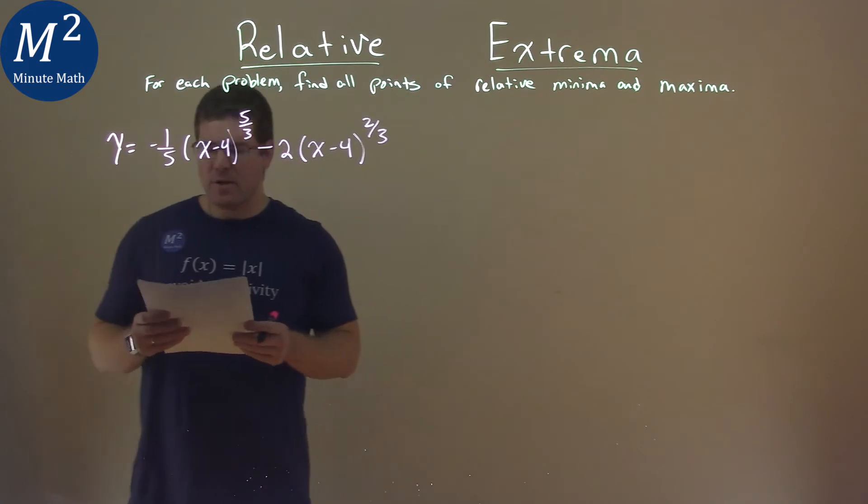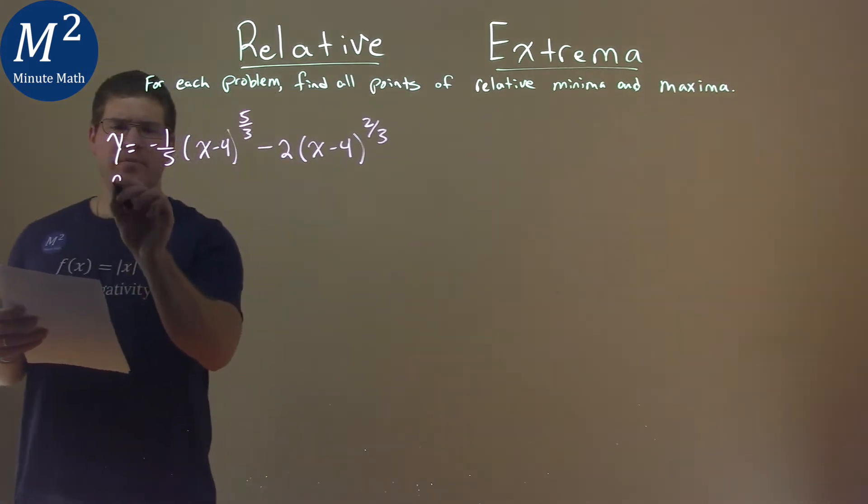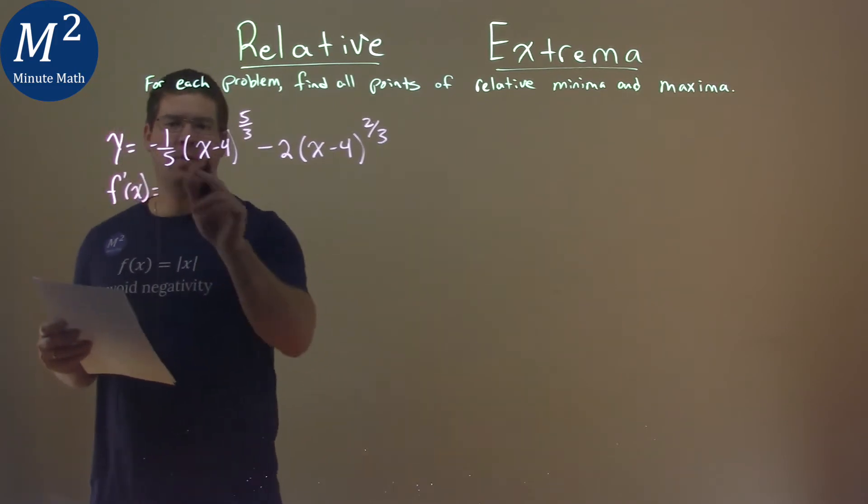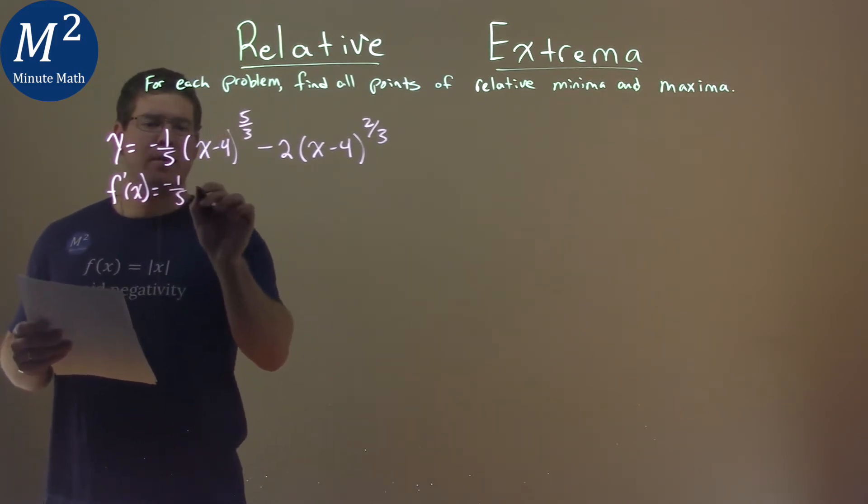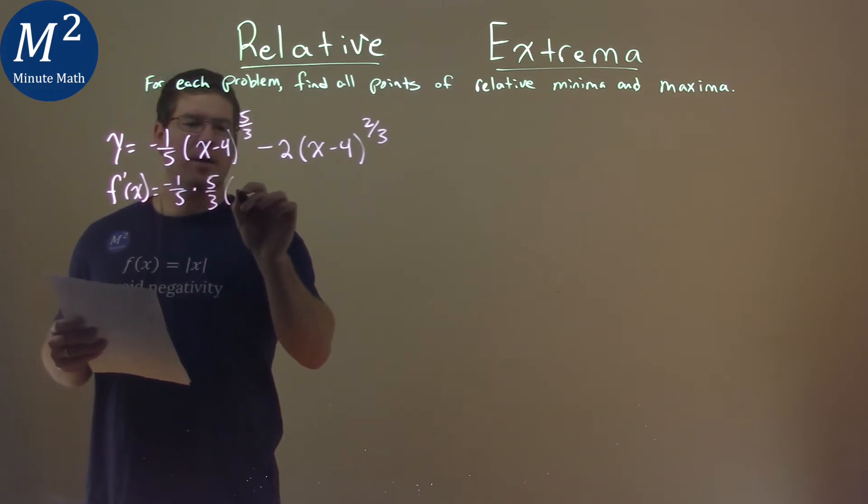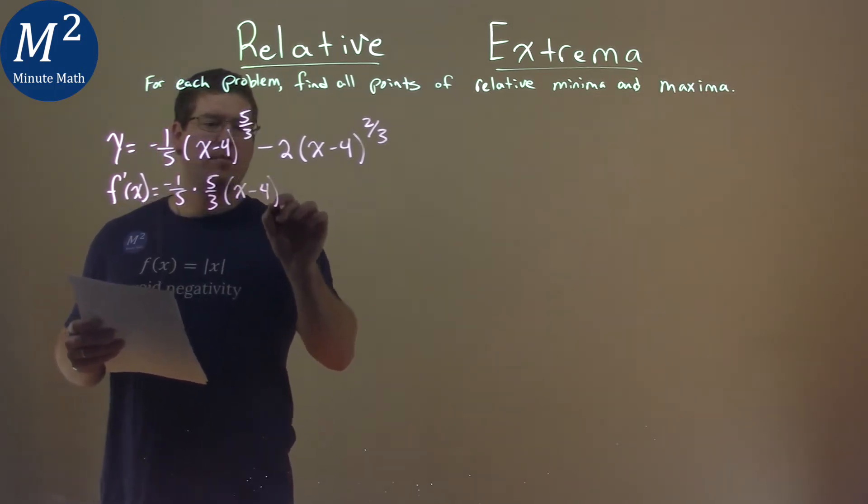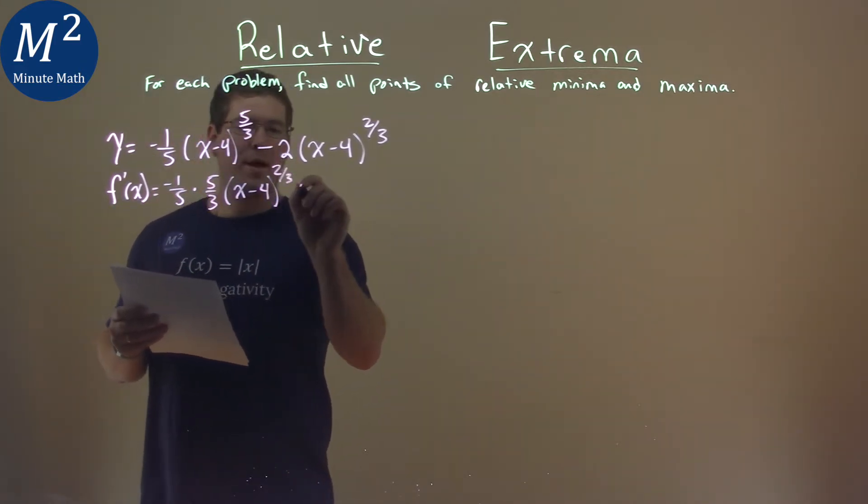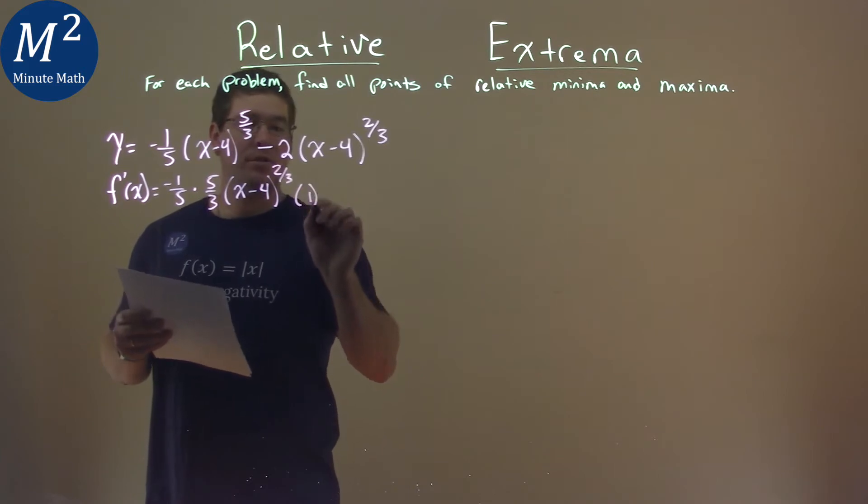Well, the first thing I want to do is find the derivative here, and it's a little tricky one. Let's take some time. Let's use our power rule. So, negative one-fifth is out here, power rule five-thirds comes down, so multiply that by five-thirds, keep the inside x minus four, subtract the exponent by one, and five-thirds minus one is two-thirds. Multiply that by the derivative of the inside, which is one.